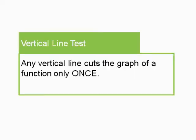And first we're going to talk about what's called the vertical line test. What the vertical line test says is any vertical line touch the graph of a function only once.